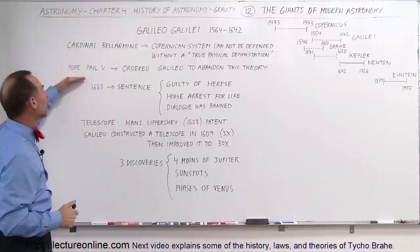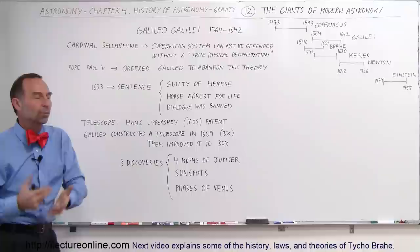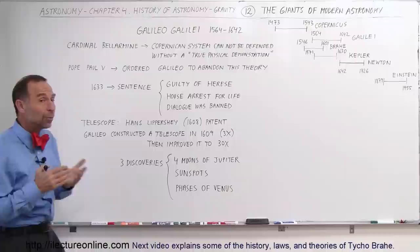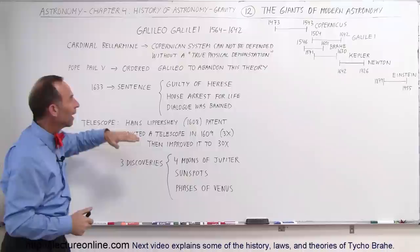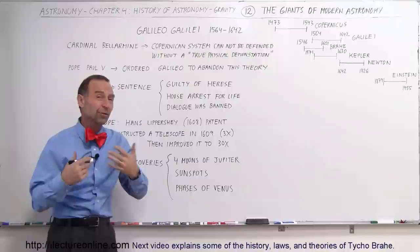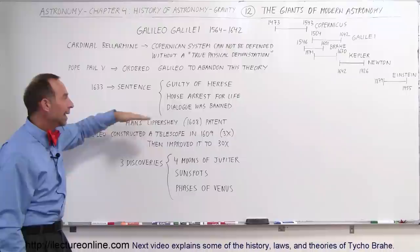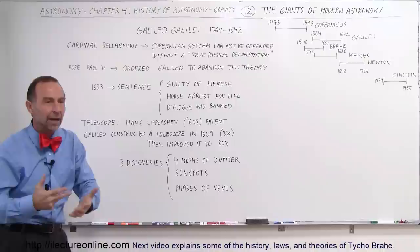Finally, in 1633, the Pope ordered Cardinal Bellarmine to send down a sentence to Galileo. The sentence was divided into three parts. First, he was guilty of heresy. Second, he was going to be placed under house arrest because at the time he was already in his 60s. Third, any dialogue regarding the Copernican theory was going to be banned. He was not allowed to do any writing or speaking about it, because if he did, they would threaten him with torture.